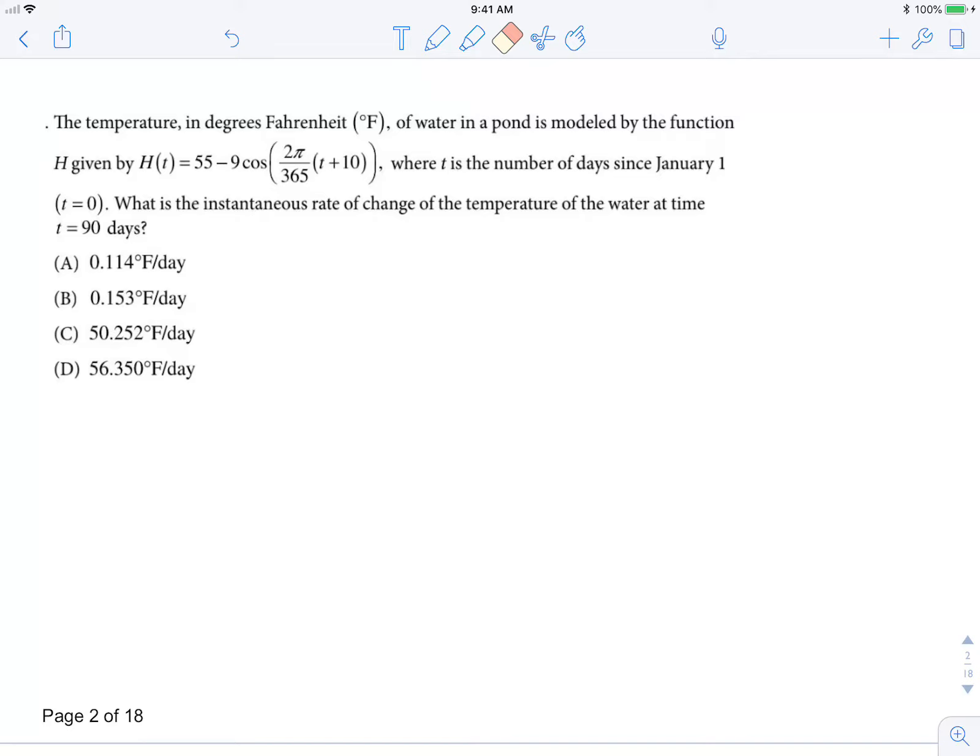The temperature in degrees Fahrenheit of water in a pond is modeled by the function h, where t is the number of days since January 1st. What is the instantaneous rate of change of the temperature of the water at time t equals 90 days?